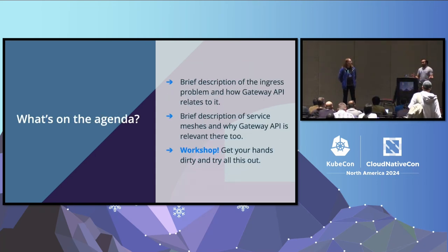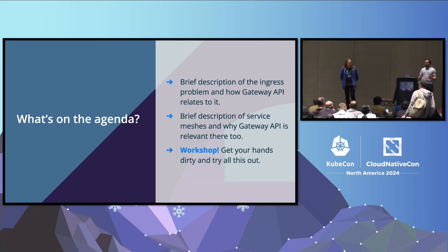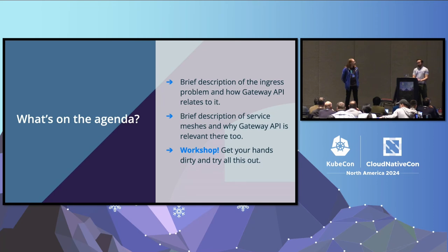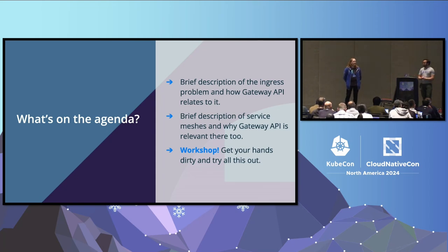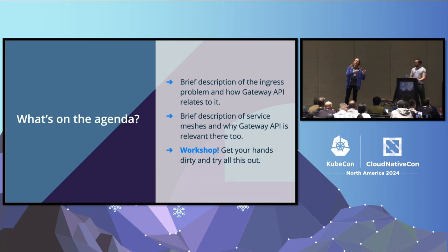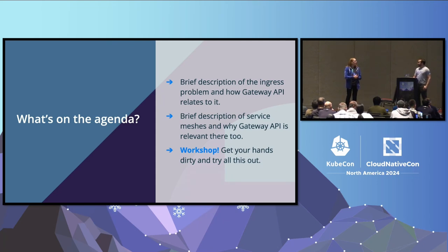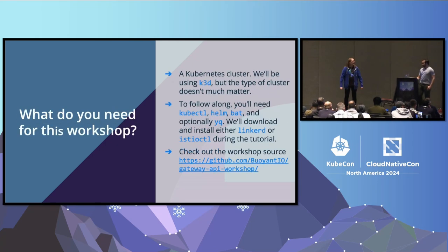What's on the agenda today? We'll start with a brief description of the ingress problem and how Gateway API relates to that — the background and why this API exists. We'll go through a brief description of service meshes and why Gateway API is relevant there too. Then we'll walk through a workshop, configuring an application on a cluster using Gateway API, watching it break, and then hoping we can fix it. Now is a good time to start praying to the demo goddesses.